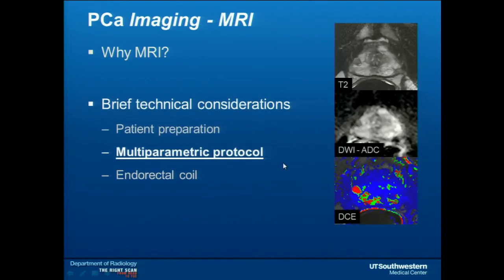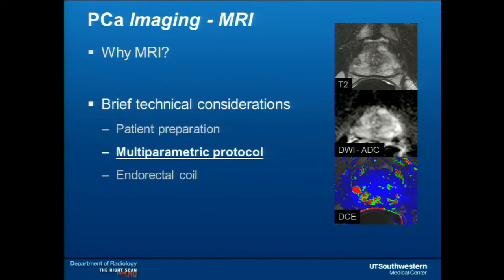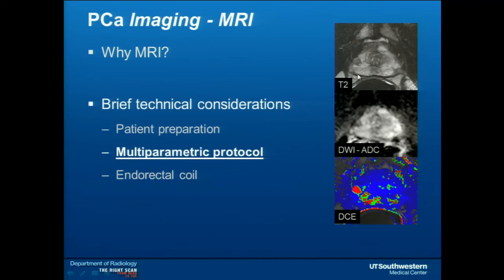The second consideration is nomenclature. You will frequently hear us talking about this study as the multiparametric MRI of the prostate. The term 'multiparametric' doesn't mean it's performed in any exquisite way — it simply means we rely on different pulse sequences and combine information from three different pulse sequences to determine whether there is an abnormality and how suspicious that abnormality looks.